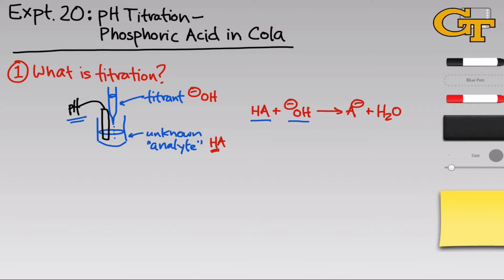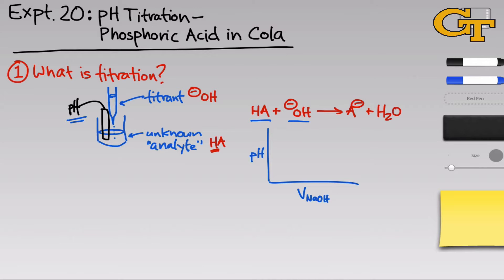The equivalence point in this pH titration corresponds to what we called the end point in prior titrations, where an indicator changed color as pH shifted from acidic to basic. Here we're not using an indicator — we're actually measuring the pH — but the equivalence point is where a color change would occur. The important quantities from titration are the volume of titrant added and the shape of the titration curve — the pH change as titrant is added. Using special points like the equivalence point and halfway to it, we can determine the concentration of HA and its acid dissociation constant.